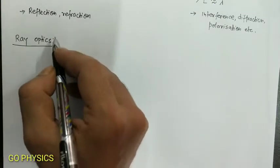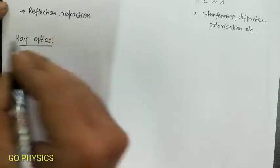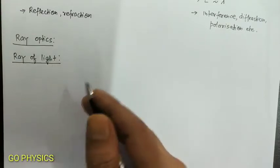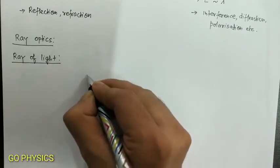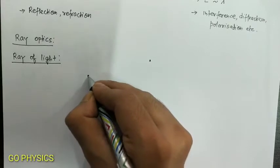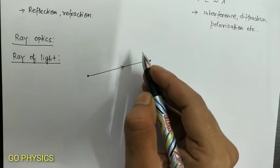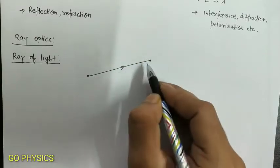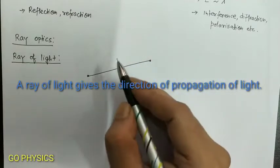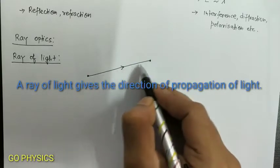In ray optics, the first topic that we will see here is what is the ray of light? Light travels from one point to another point along a straight line joining them. The path of light is called a ray of light, or we can say that a ray of light is a very thin or narrow beam of light.